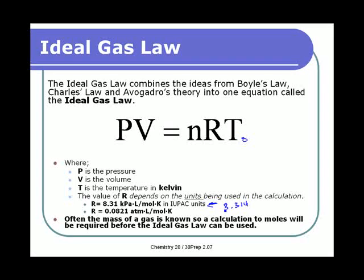Most of the time we're not going to know the number of moles — we're going to be given a mass. So we combine the ideal gas law with our molar mass formula. Isolating N: N is equal to mass over molar mass. We substitute mass over molar mass for the number of moles, giving us PV = (mass/molar mass) × RT.